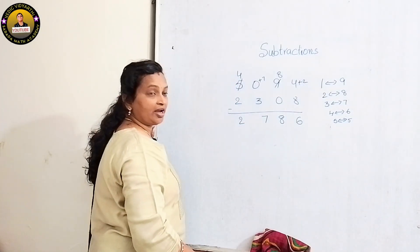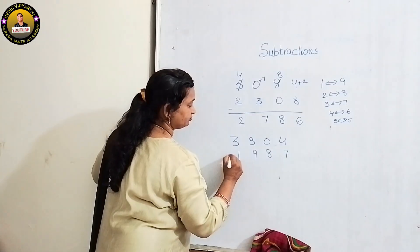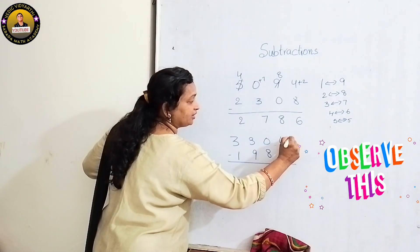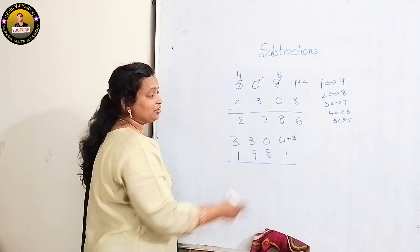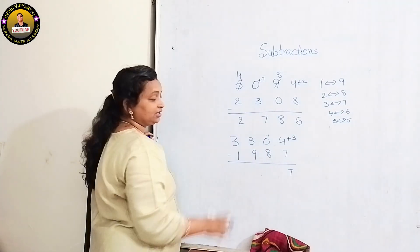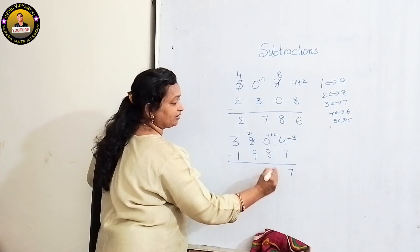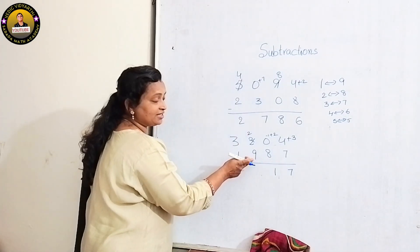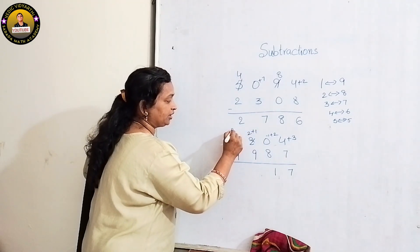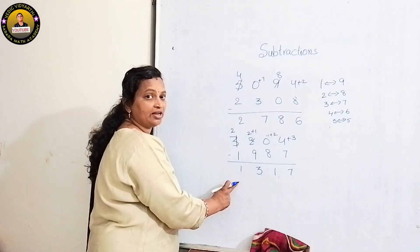3304 minus 1987. 4 minus 7 — we can't subtract, so add complement of 7, which is 3. Decrease 1 from the previous digit. 4 plus 3 is 7. Next: complement of 8 is 2, so add 2, then decrease 1 — the answer is 1. Next: 2 minus 9 — we can't, so add complement of 9, which is 1. Decrease 1, and 2 plus 1 is 3. Then 2 minus 1 is 1. Final answer is 1317. Thank you.